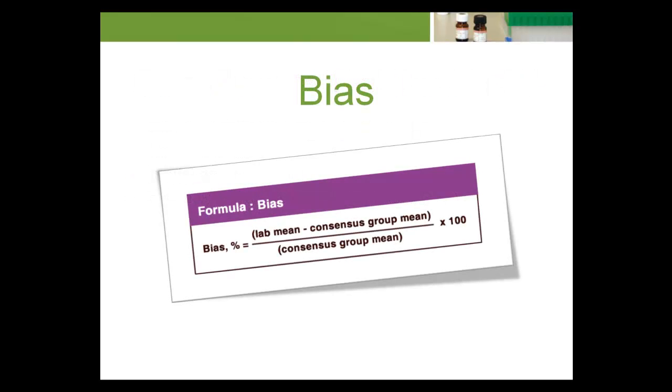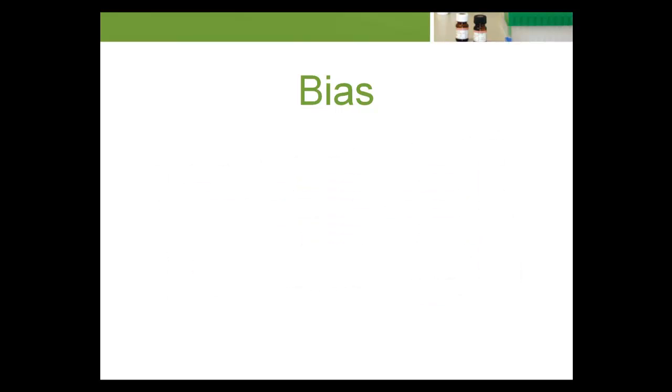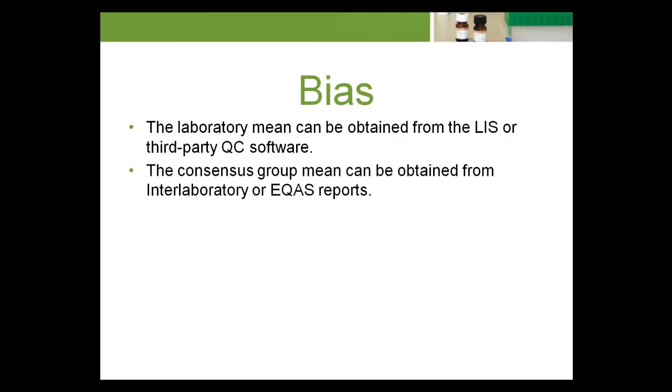The last component of the equation is bias. The calculation for bias requires two pieces of information: Lab mean and consensus group mean. The laboratory mean can be obtained from the LIS or third-party QC software. The consensus group mean can be obtained from interlaboratory reports.